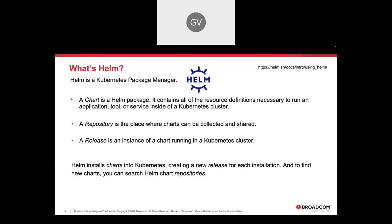So Helm, simply put, is a Kubernetes package manager. A chart is a Helm package that contains all of the necessary resource definitions — Kubernetes manifests — to run an application, tool, or service inside of Kubernetes. A repository is where those charts can be collected and shared. We have a Layer 7 repository, and I'll show you how to go about adding that using Helm.